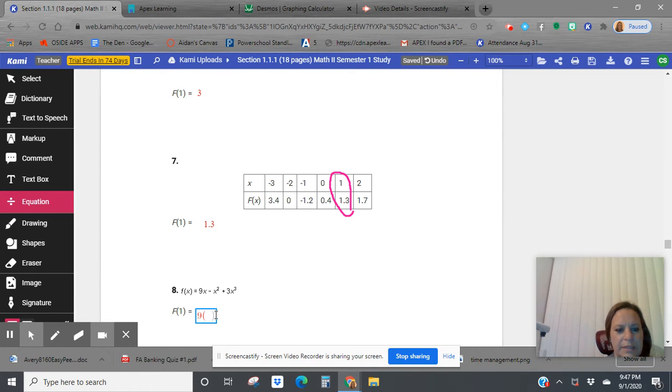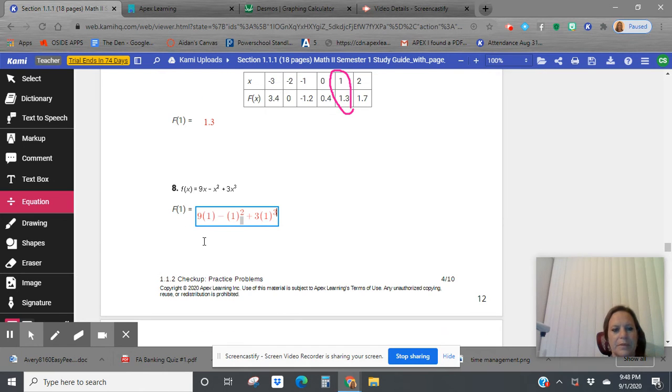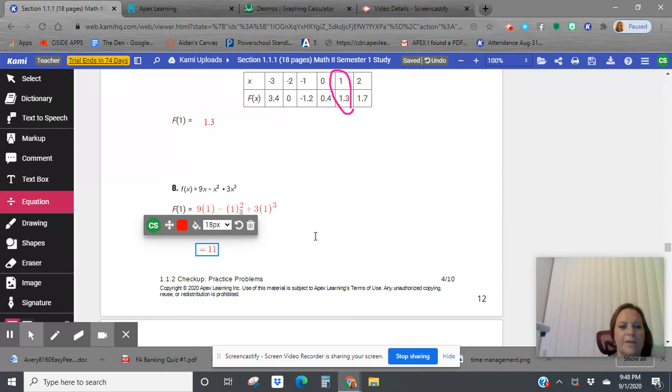So nine parentheses. Plug in that one. Minus one squared. Remember, I'm using a shift six to get to the squared. And then plus three parentheses one to the third. So simplifying this, we're going to say equals nine times one makes nine. One squared or one times one is just one. And one to the third, one times one times one is one, times three, gives us just three. Nine minus one is eight. Eight plus three is eleven. F of one equals eleven.